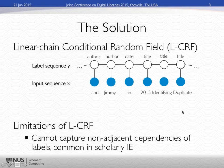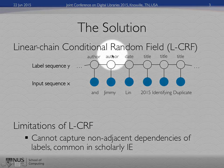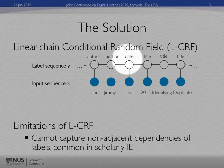It works really well. We use CRFs for lots of different things in computer science technology, including object extraction. But it doesn't capture long-range, non-adjacent dependencies, which is really common in scholarly information extraction. For example, you can see the author and the title are separated by a field in between — date. And we don't have a way of representing that easily using a linear CRF.